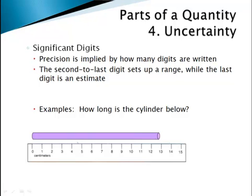If we were measuring this cylinder with this specific ruler, this ruler is not very precise — it only goes down to centimeters. Looking here, I can say with confidence that the length is between 12 and 13 centimeters. I'm allowed to estimate one digit, so personally I would say 12.7. But my lab partner might say 12.8 or maybe 12.6, and if I came back a week from now I'd probably say something a little different too. So that last digit — the 7 — is really an estimate.